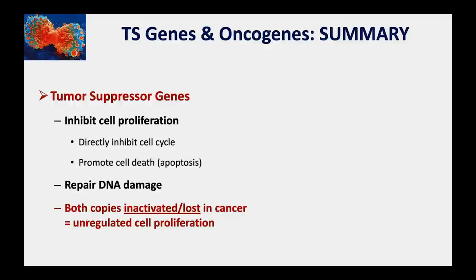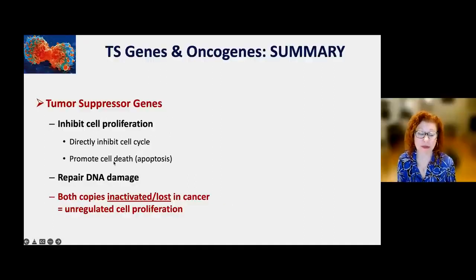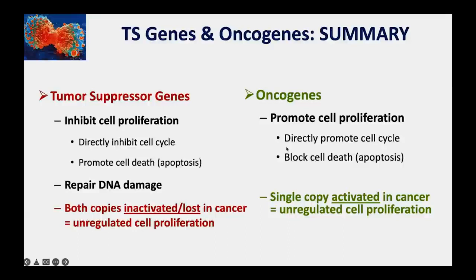To summarize tumor suppressor genes and oncogenes: tumor suppressor genes inhibit cell proliferation—they can act directly to inhibit the cell cycle, blocking the cell from dividing, or they can promote cell death. There are also tumor suppressor genes involved in DNA repair. In cancer, both copies are inactivated or lost, leading to unregulated cell proliferation. Oncogenes promote cell proliferation—they can directly promote the cell cycle, turning it on so cells start dividing, or block cell death so cells accumulate. For oncogenes, a single copy is activated in cancer, resulting in unregulated cell proliferation.